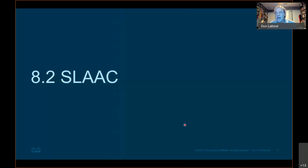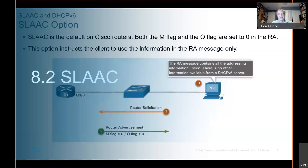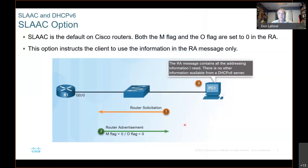Let's talk in depth about SLAAC first — that's the auto configuration. SLAAC is the default on Cisco routers. Both the M flag and the O flag are set to zero in the router advertisement. This instructs the clients to use information in the router advertisement message only. The router advertisement message contains all of the address information needed — there is no other information available from the DHCP server. The router solicitation goes from PC1 to the router; the router responds with the M flag and the O flag not set, the A flag is set, and then PC1 knows it's going to be creating its own address.